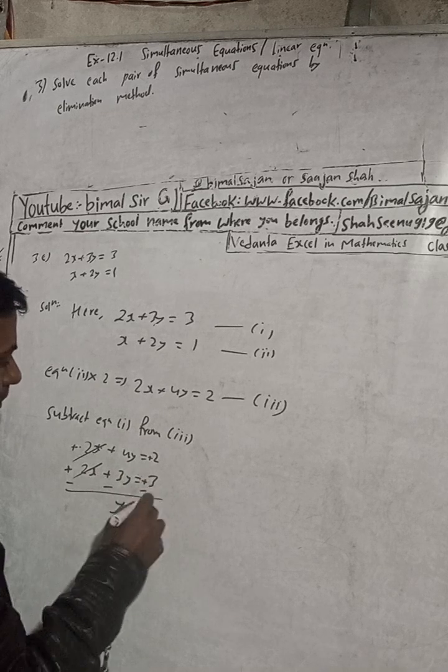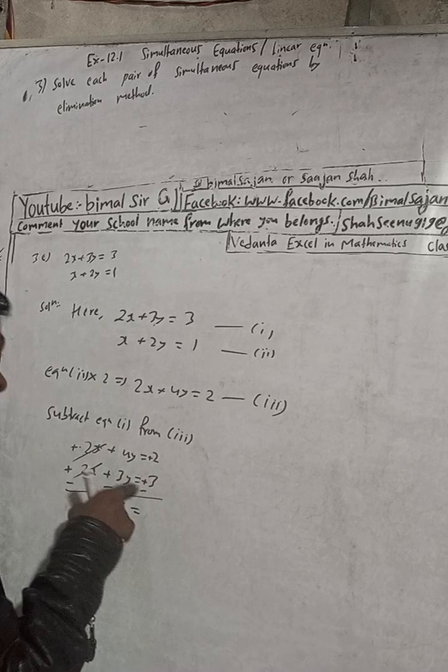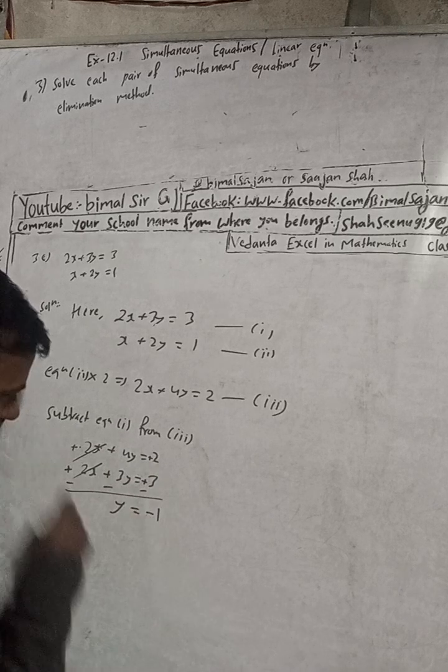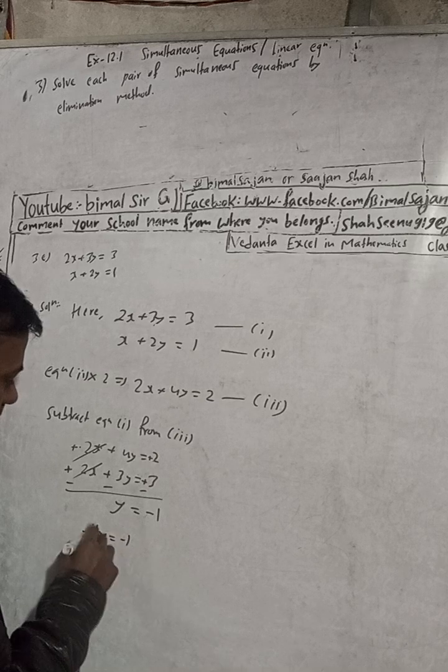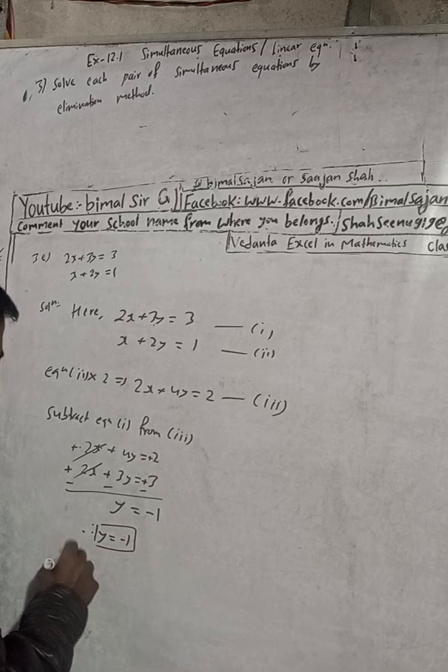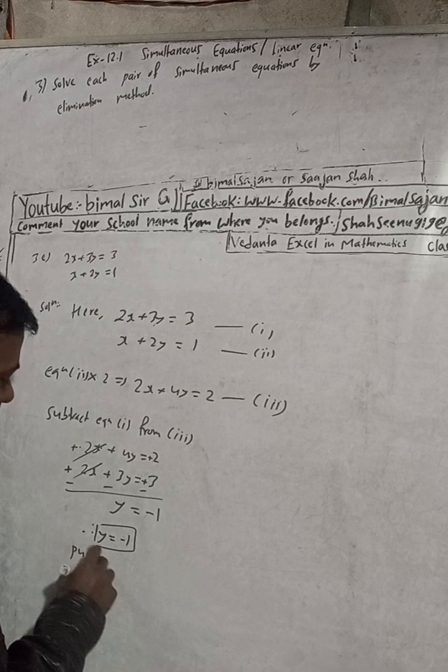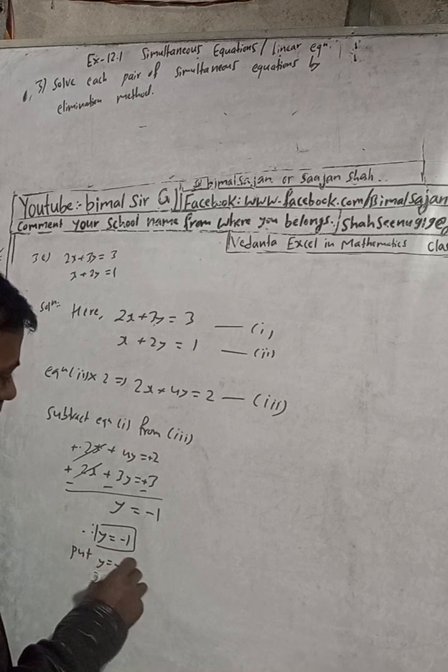And this is 2 minus 3, so this is minus 1. Therefore, we got y is equal to minus 1. Now put y is equal to minus 1 in equation...